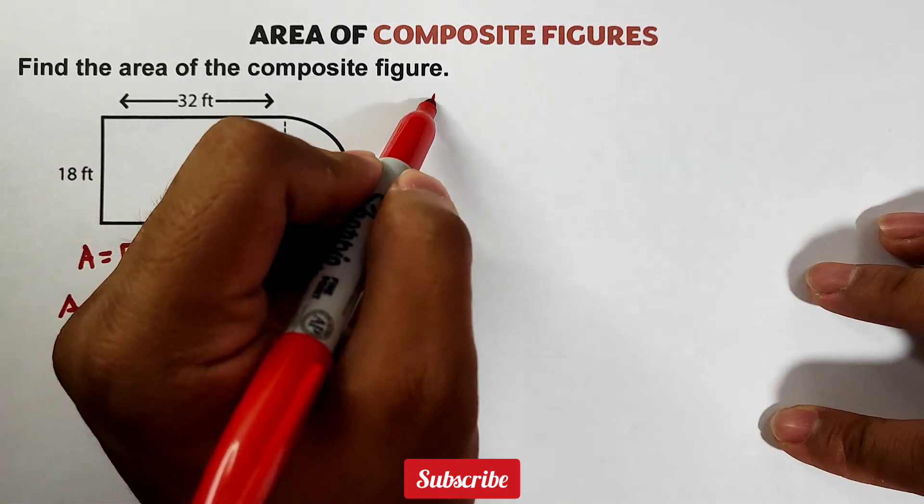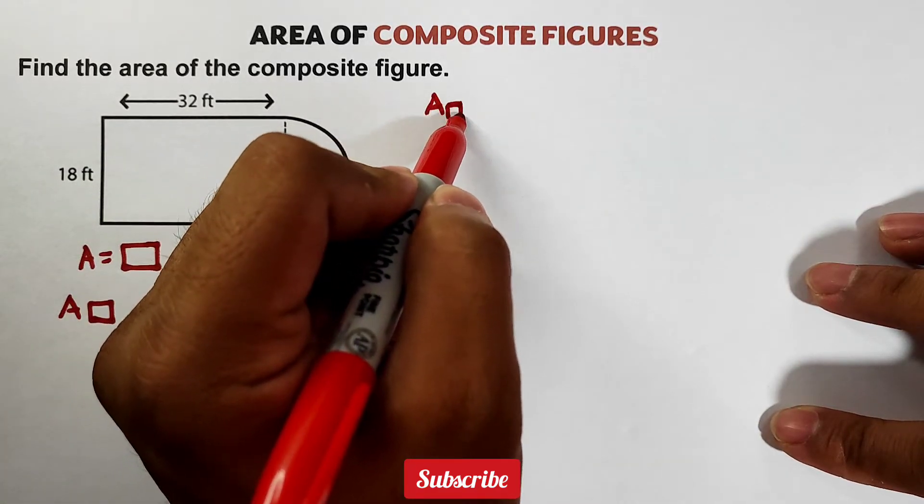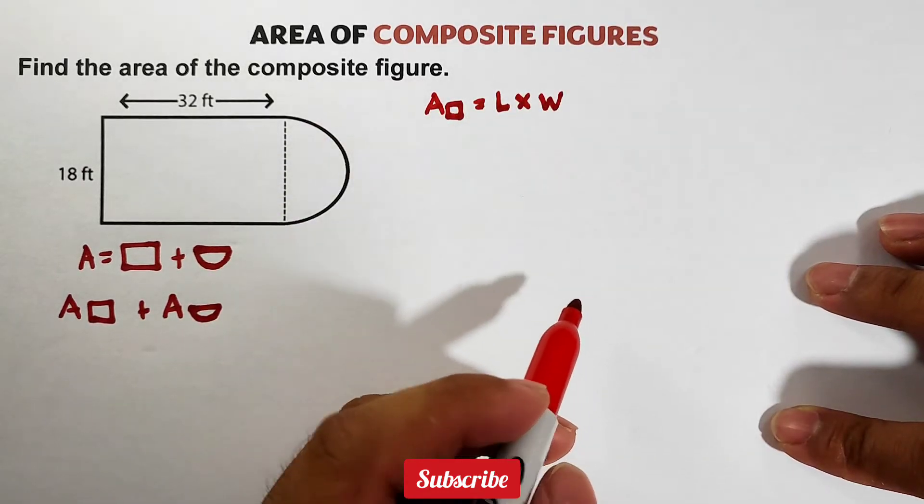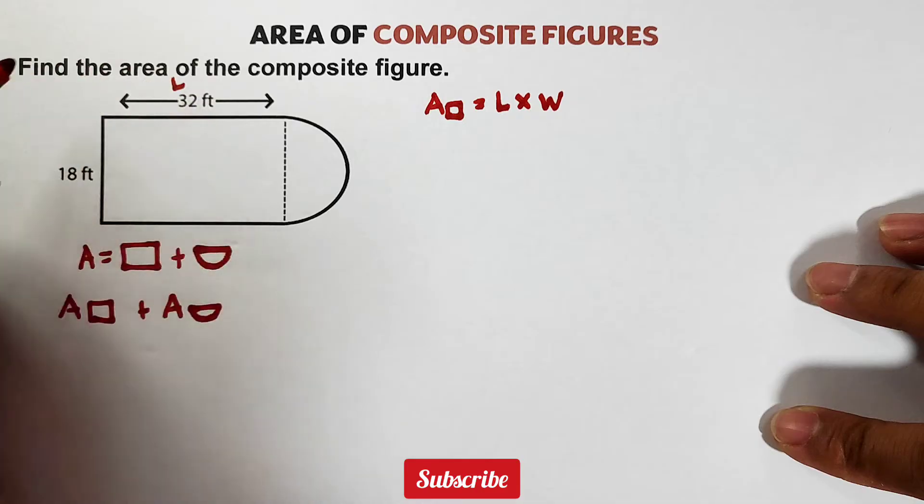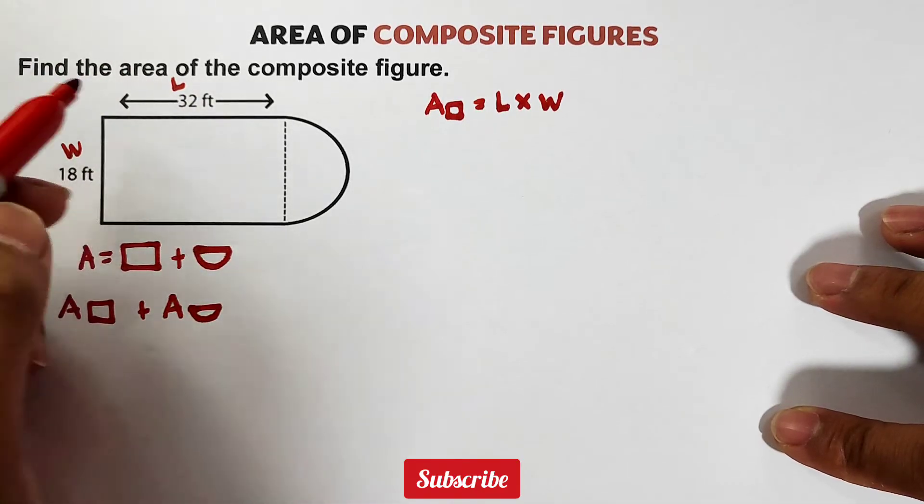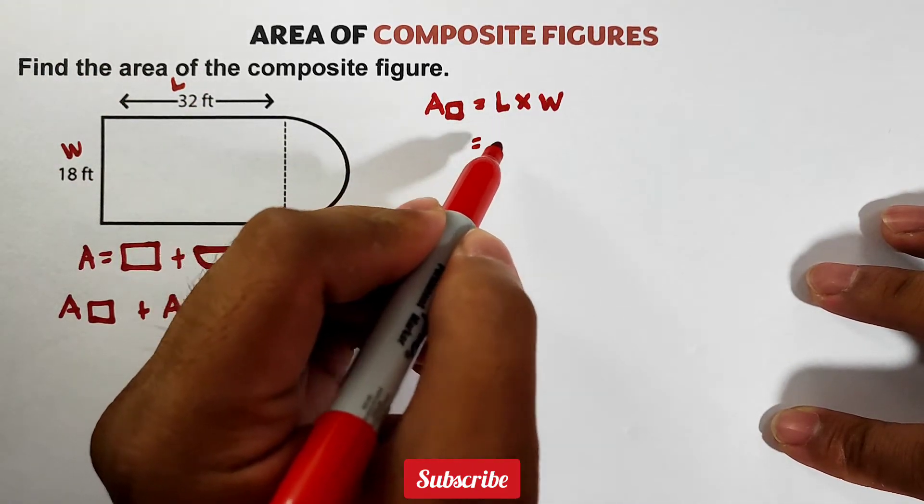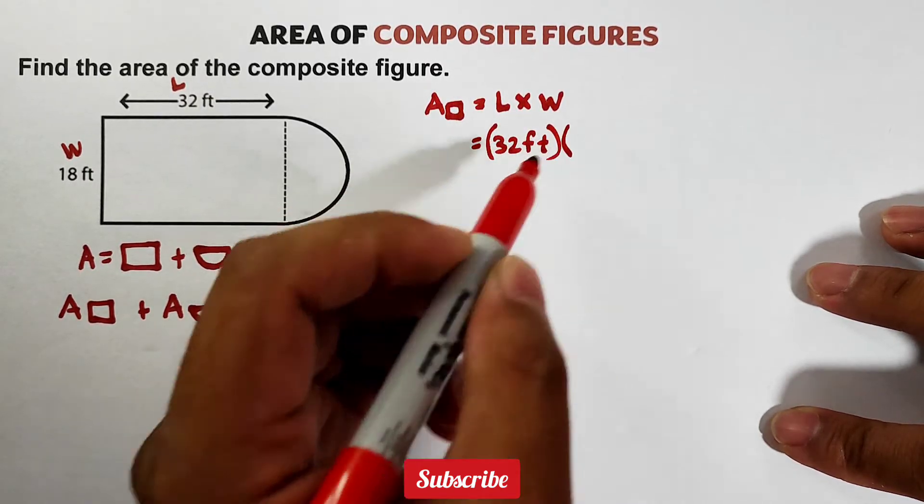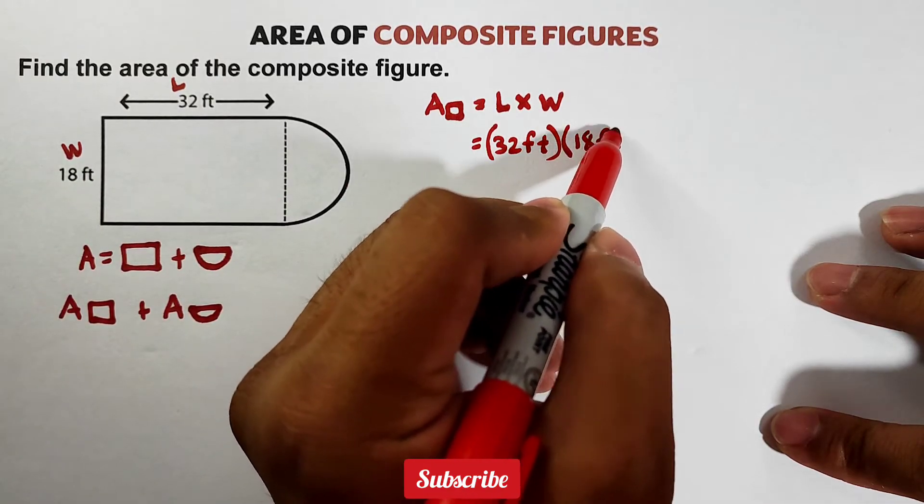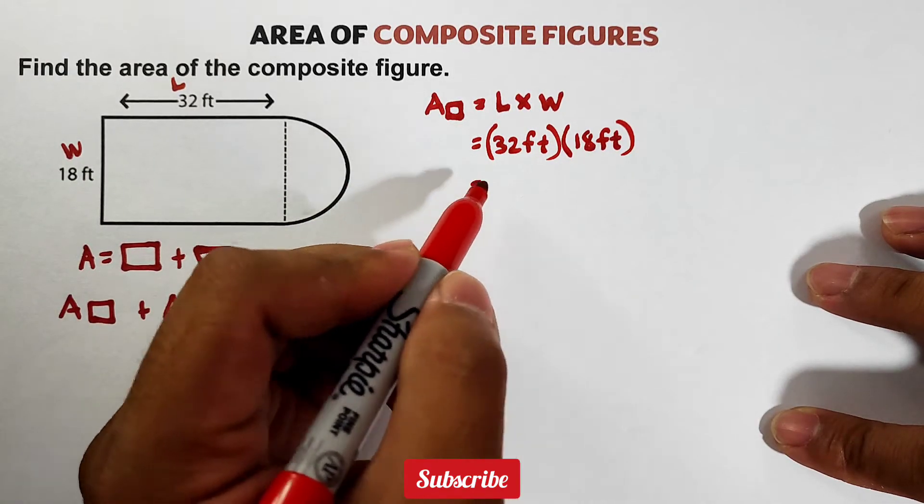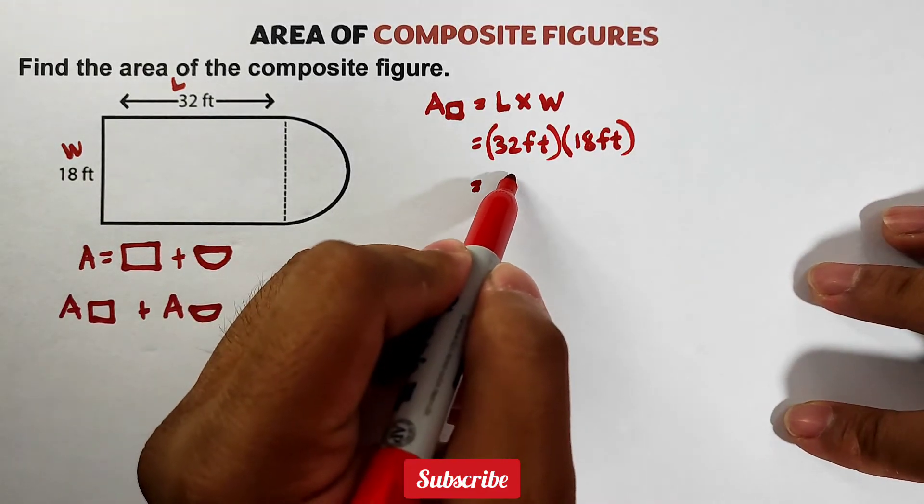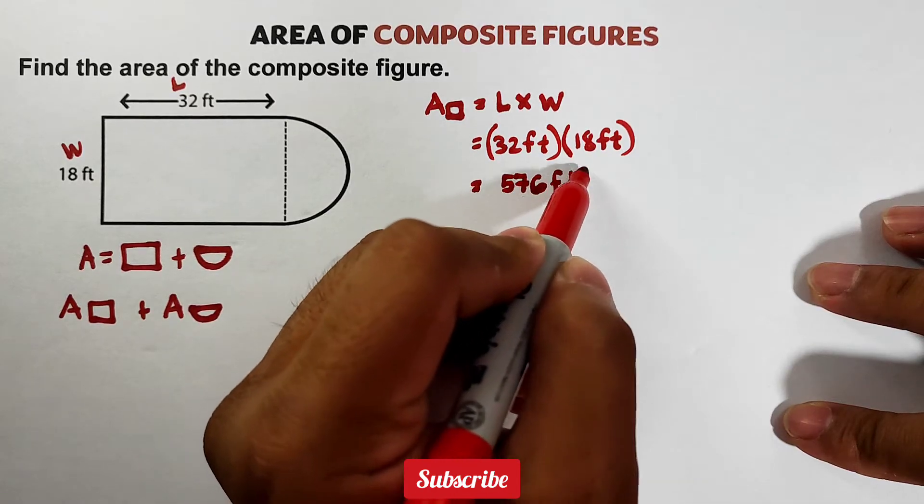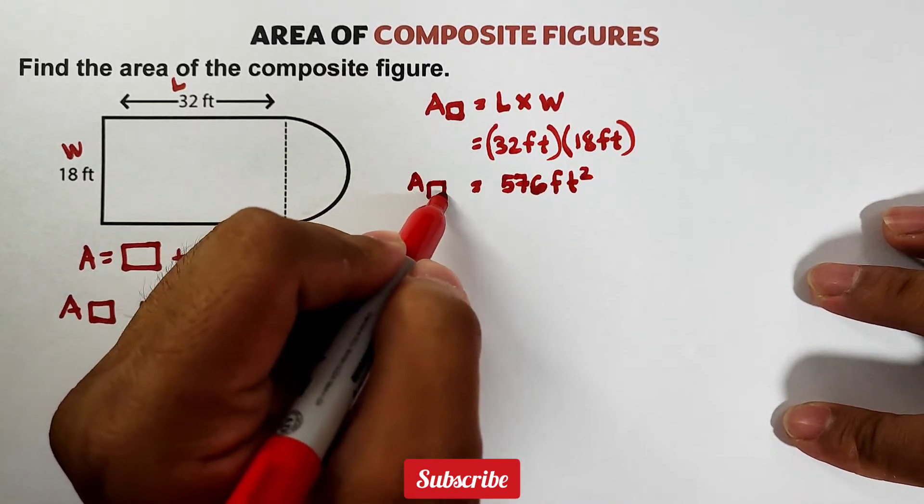First, the rectangle. Area of the rectangle is equal to the length times width. In this figure, the length is 32 feet and the width is 18 feet. Substitute the length, which is 32 feet, times your width which is 18 feet. Multiplying them, this will give us 576 feet squared. This is now the area of the rectangle.